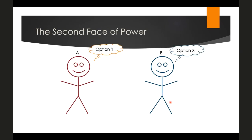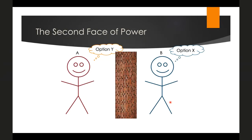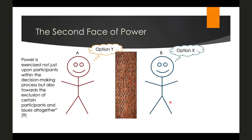Gaventa turns to sociological writers on institutions to develop a second face of power. Here again we have A and B with different preferences — option Y and option X — but rather than trying to influence B to accept option Y, the second face of power occurs when A can exclude B from decision making altogether. Gaventa writes on page nine that power is exercised not just upon participants within decision making processes, but also towards the exclusion of certain participants and issues entirely — through what he calls the mobilization of bias. This prevents certain issues from even arising, functioning as the power to set the agenda.